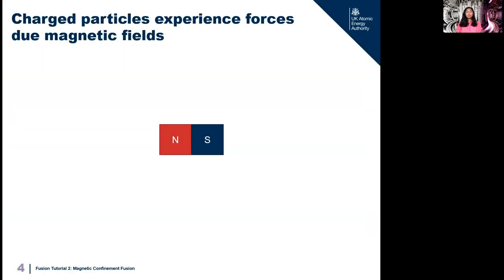Charged particles experience forces due to magnetic fields. Let's look at this bar magnet first — we've all seen one of these before. The red side represents the north pole and the blue side represents the south pole. We know that opposites attract and like poles repel. So if you place this small bar magnet here, it would be attracted to the larger bar magnet because opposites attract, and we can draw an arrow showing the force the smaller bar magnet feels. And if the poles are the same, they will repel each other, and we can draw an arrow in the other direction.